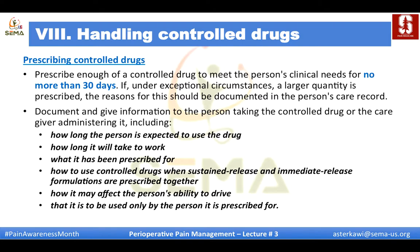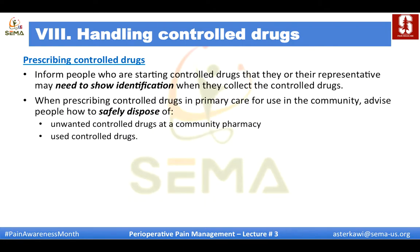Prescribe enough controlled drug to meet the person's clinical need for no more than 30 days. Document and give information to the person — or caregiver — including how long the person is expected to use the drug, how long it will take to work, what it has been prescribed for, how to use the drug when sustained-release and immediate-release formulations are prescribed together, how it may affect the ability to drive, and that it is to be used only by the person for whom it is prescribed. Inform people starting controlled drugs that they may need to show identification when collecting their prescription.